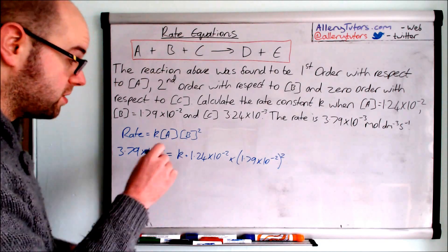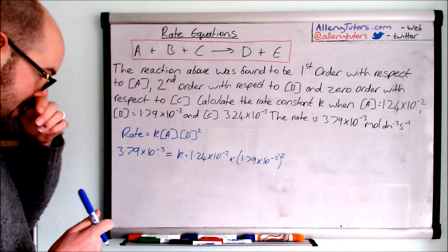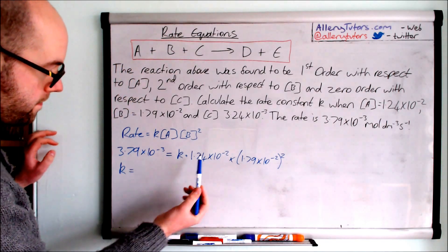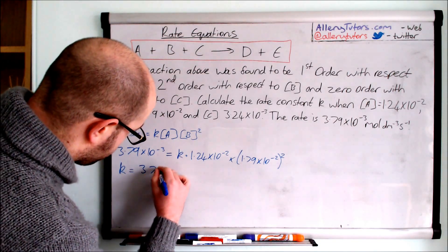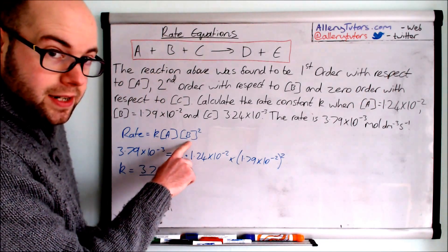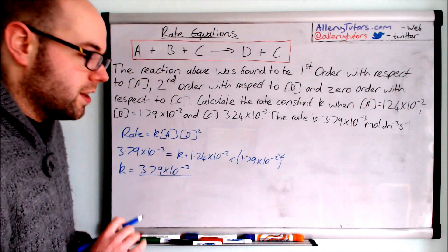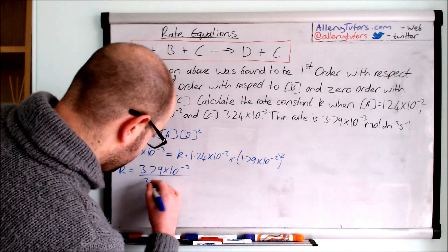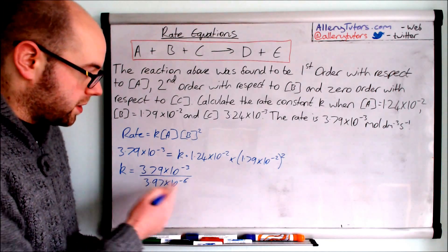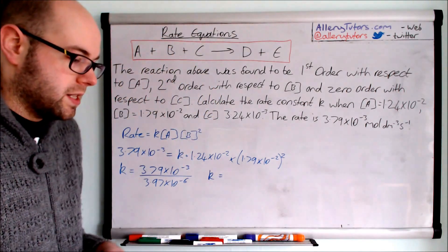All we need to do is rearrange to find k. We don't need to find the rate — we already have it — so we rearrange: k equals the rate 3.79×10⁻³ divided by [A]×[B]². If you multiply [A] by [B]² in your calculator — that's 1.24×10⁻² multiplied by (1.79×10⁻²)² — you should get 3.97×10⁻⁶.